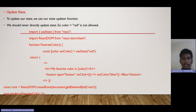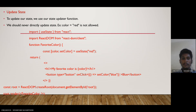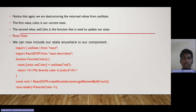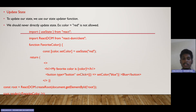Here we rendered it into our root. This is how the useState hook can be used. Firstly, we need to import the useState hook. Then we need to initialize it. Then we need to read the state. After that, we can update the state by using the function setColor. Thank you.